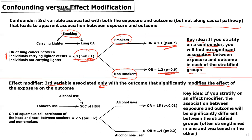So if we're doing a study looking at the effect of tobacco use on the risk of squamous cell cancer of the head and neck, a potential effect modifier to consider is alcohol use, given that we know alcohol use also puts you at increased risk for squamous cell cancer of the head and neck, but the association between alcohol use and tobacco use isn't as clear — alcohol use doesn't necessarily cause tobacco use, and tobacco use doesn't necessarily cause alcohol use. So let's investigate its role as a potential effect modifier.